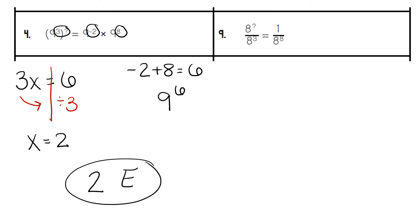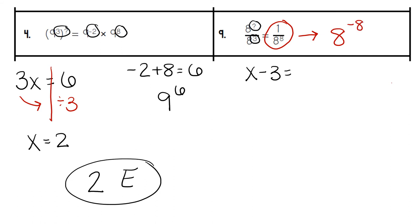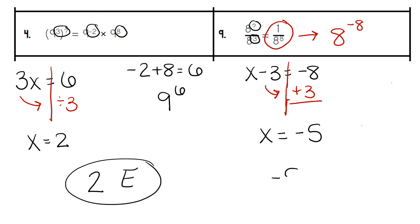For number 9, the problem starts with a division problem, so we subtract: our unknown exponent minus 3. On the other side we have a fraction. Any time we have a fractional exponent, it really means the exponent was originally a negative exponent — all negative exponents have to be written as fractions. Therefore, negative 8 is the answer we need to match on the other side. We work backwards and do a plus 3 instead of minus 3. Negative 8 plus 3 gives us a negative 5. Our missing exponent is negative 5, represented by the letter C at the bottom.